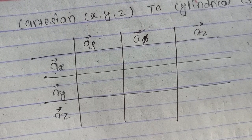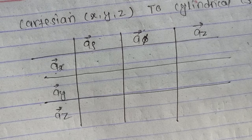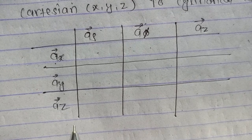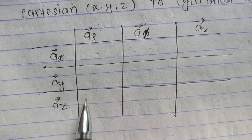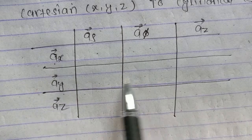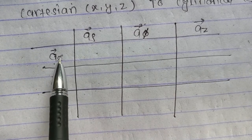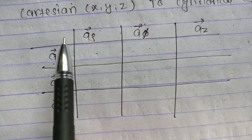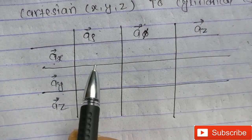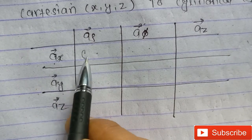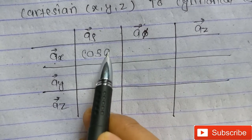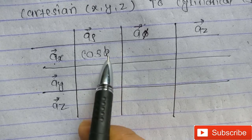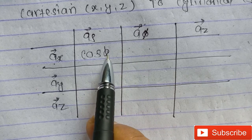This trick applies in the coordinate system or in vector transformation. First, you have to arrange all the vectors — place the Cartesian form in the column and then place the cylindrical form in the row. In the first place, you have to write cos phi. Just remember: here is the phi, so we place phi here.